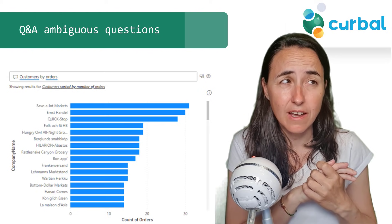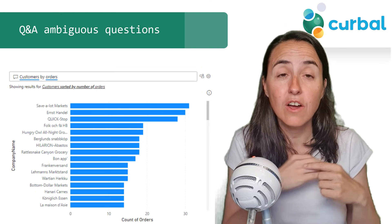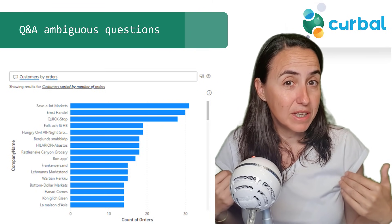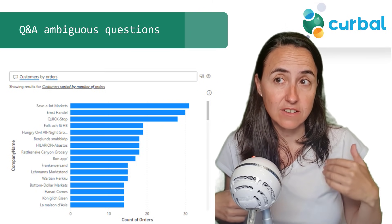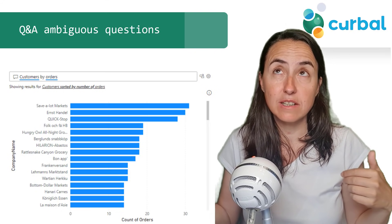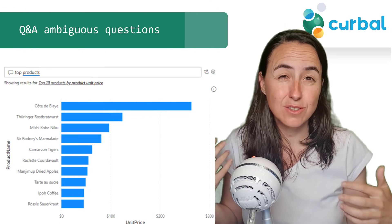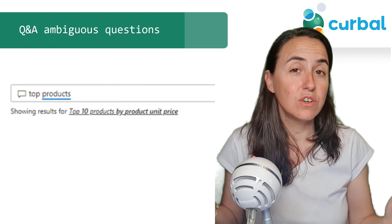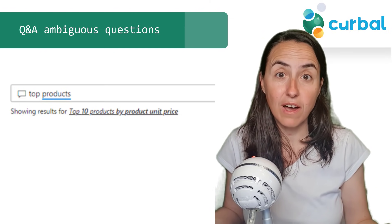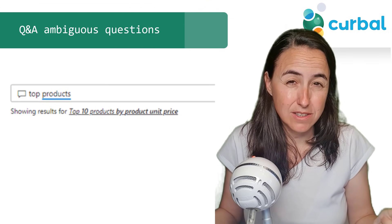Now we move to analytics Q&A. I'm very curious how many of you are using Q&A — I haven't seen anybody use it, so let me know in the comments if you or your organization use it. The update for Q&A is that sometimes users ask ambiguous questions. For example, 'top product' — the engine is going to try to guess what the user is actually asking to provide an answer, and I'm not really sure that this is a good idea.